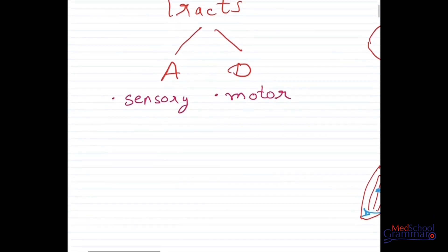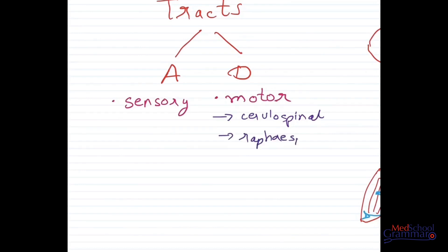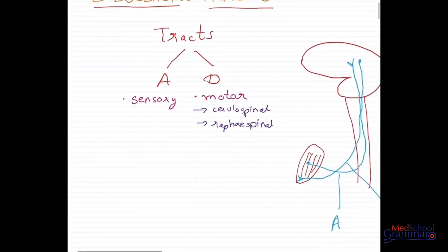However, there are a few exceptions to the rule that all Descending Tracks are motor in nature. That statement is not entirely accurate because there are certain tracks that have sensory function as well. Those tracks are the Cerullospinal Tract and the Raffae Spinal Tract. These two tracks, apart from having some motor function, also have sensory function.